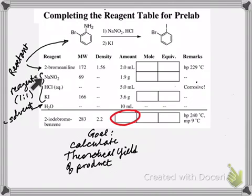The 2-bromoaniline, the NaNO2, and the KI all have to react in a one-to-one ratio in order to form one equivalent or one mole of the 2-iodobromobenzene. And so that stoichiometry is important, and we need to know that before we can do our calculations.